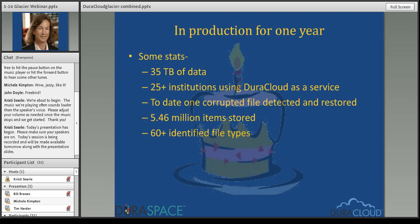We have been in full production for about a year and a half. Before going into production, we were in a pilot phase for about seven or eight months with nine users. In this first year and a half, we're storing 35 terabytes of data across roughly 25 institutions. We've actually detected one corrupted file, replaced it with a copy, and verified it through the manifest we generate when we check the health of content on upload. We have 5.46 million items stored and over 60 identified file types.